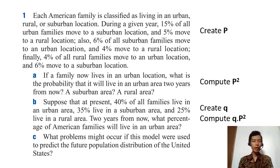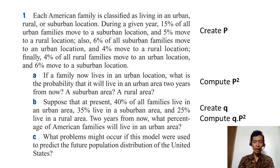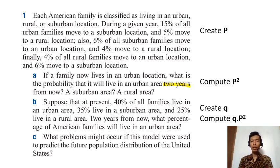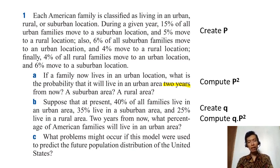Based on the problem, here are the steps: first, we create the transition probability matrix from those sentences. Then for point A, it asks about the probability two years from now, which means we need to compute P squared — the transition probability two steps from now.